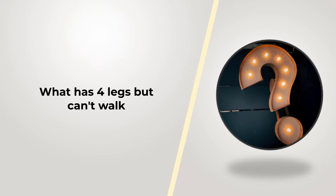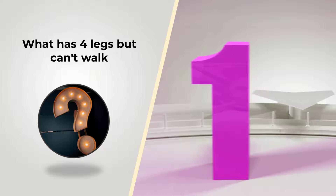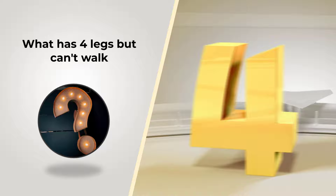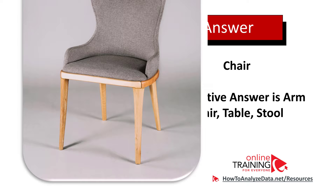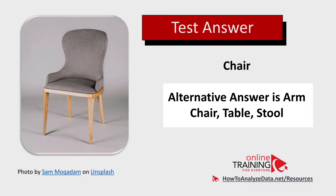Here is a question that tests your understanding of the English language, your vocabulary, and your ability in logical reasoning: what has 4 legs but can't walk? Think out of the box and think of something that doesn't necessarily walk. The answer is a chair — and alternative answers could be an armchair, a table, or a stool. Hopefully you figured it out and now know how to answer similar problems on the test.